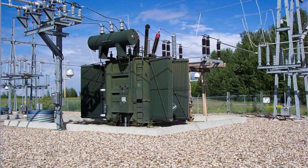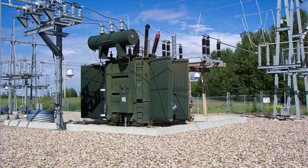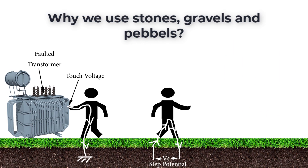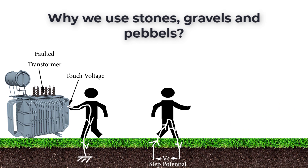For power transformers, we use stones, pebbles, and gravels for more than one reason. The primary reason is to decrease the step voltage and touch voltage by increasing the soil resistance, which will reduce the risk of electrical shock hazards. If you don't know what step and touch voltages are, you can check the touch and step voltages video in the description below to understand it exactly.